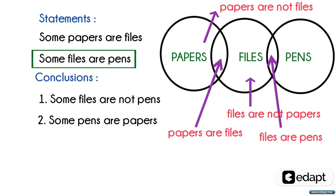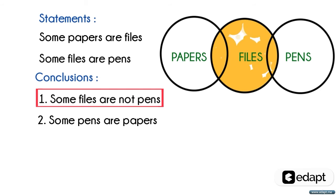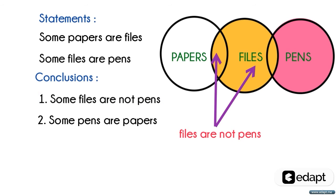Let's take the first conclusion: some files are not pens, meaning that some portion of files are not pens. You can find this region in which no portion of pens are there. So we may say that some files are not pens is a true conclusion.